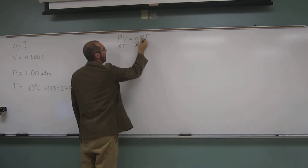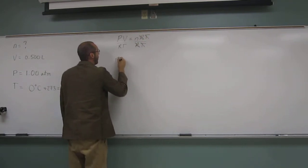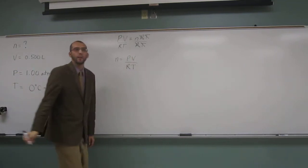Okay, so when we do that, we're going to cancel R there, cancel T there, and what do we get? We get N equals PV divided by RT, like that.